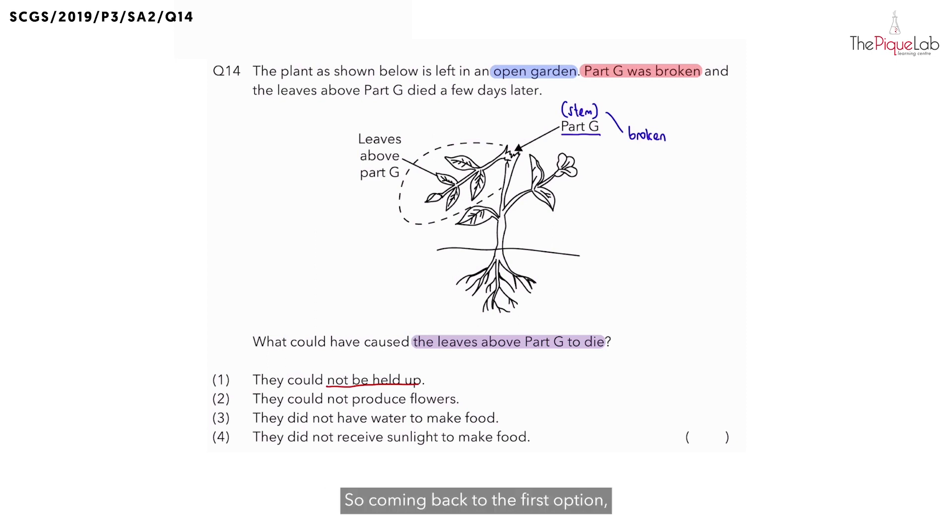Coming back to the first option, is it true that when the leaves are not held up, it means that the leaves will die? No, this is not necessarily true. So can option one be used to explain why the leaves above part G would die? Answer is no. It does not explain. So can I choose option one? No. I'm going to cross it out.